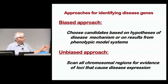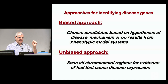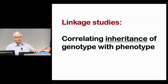The other approach is to take an unbiased approach — scan all chromosome regions for evidence of loci that affect disease expression. In the case of a clearly inherited disease, a dominant disease, you expect to find one location in a given family associated with it. The problem was you needed the methods to be able to do that.